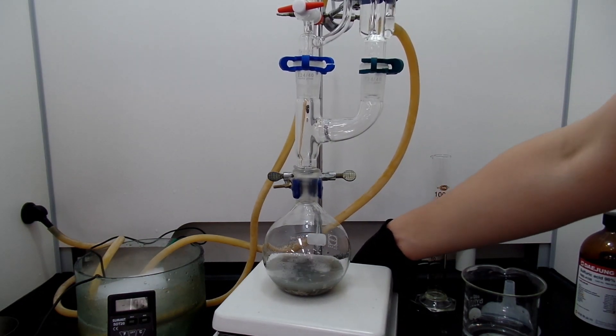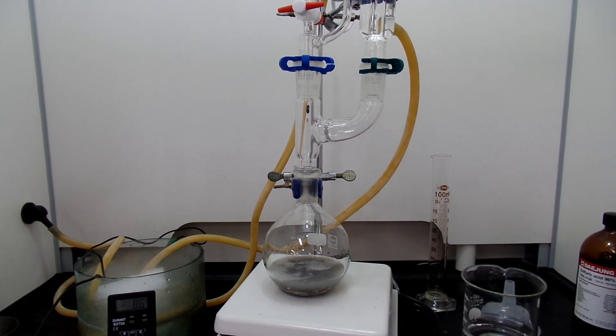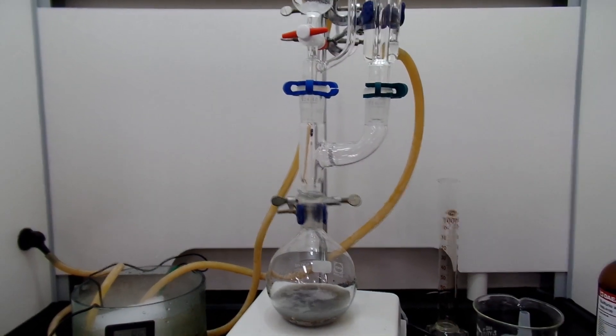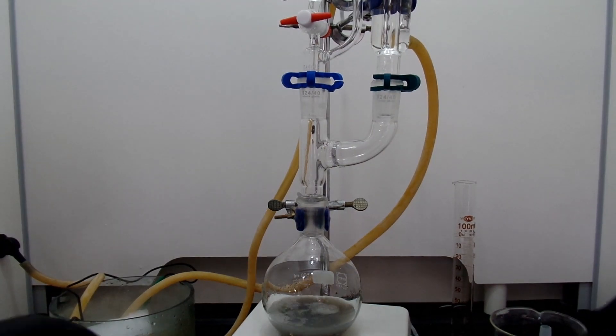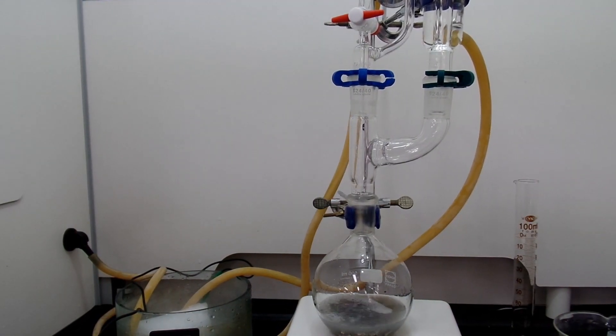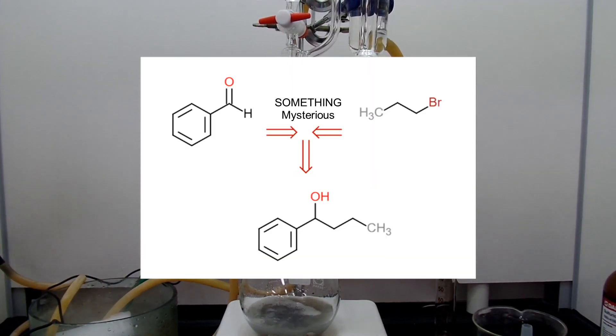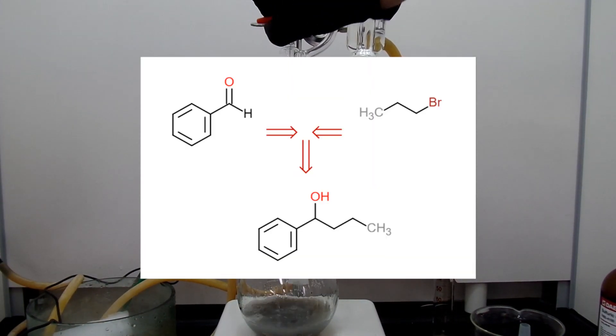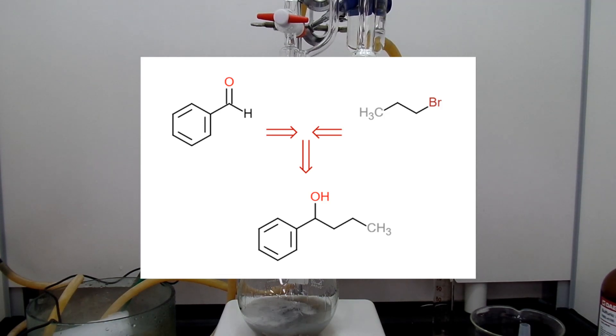So before I even started my reaction, I dried my ether with anhydrous calcium chloride that was dried in the oven. I also dried benzaldehyde and 1-bromopropane with magnesium sulfate. My plan is to make 1-phenyl-1-butanol by reacting 1-bromopropane with benzaldehyde.